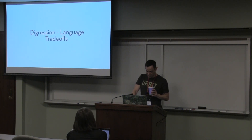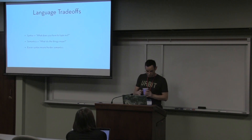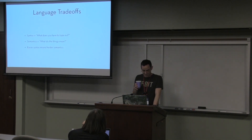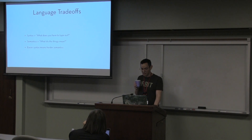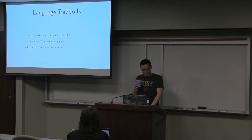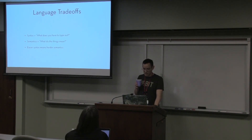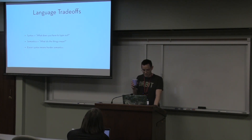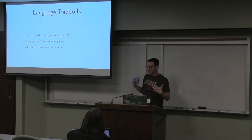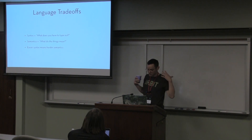A brief digression on language tradeoffs. I described Hoon's syntax as terrifying — I think most people who dig into it would agree — although after seeing the APL presentation I have a new appreciation for how terrifying syntax can be. By syntax I mean what you have to type out to do the thing you're trying to do. This is different from semantics, which means what the things you're typing actually mean — how easily can you fit all of this into your head?